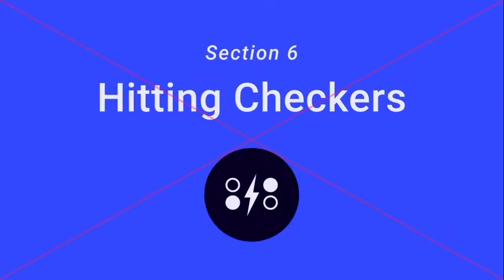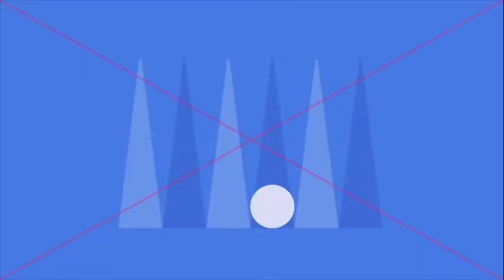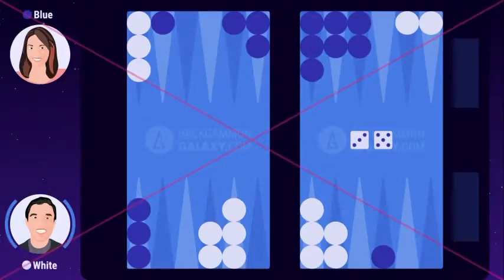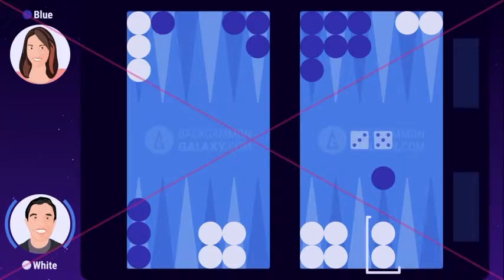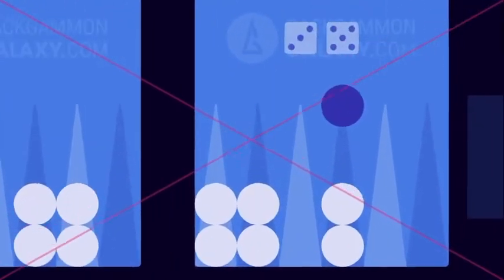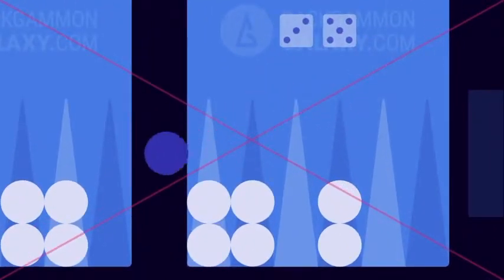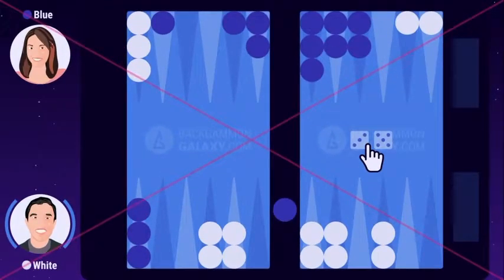Section 6: Hitting Checkers. A single checker is called a blot. This checker can be hit if your opponent lands on it. In the current position, blue has one blot on white's three point and two blots in her outer board. In the previous section, white rolled 3-5. He decides to hit blue while at the same time making a valuable anchor in his home board. When a checker is hit, it must be placed on the bar. White confirms the move by clicking on the dice.